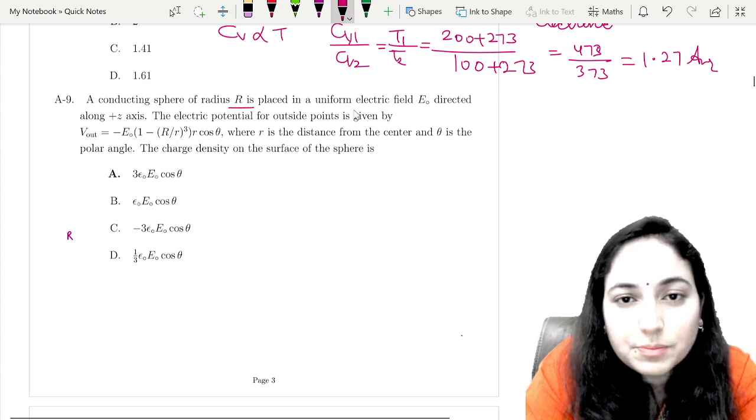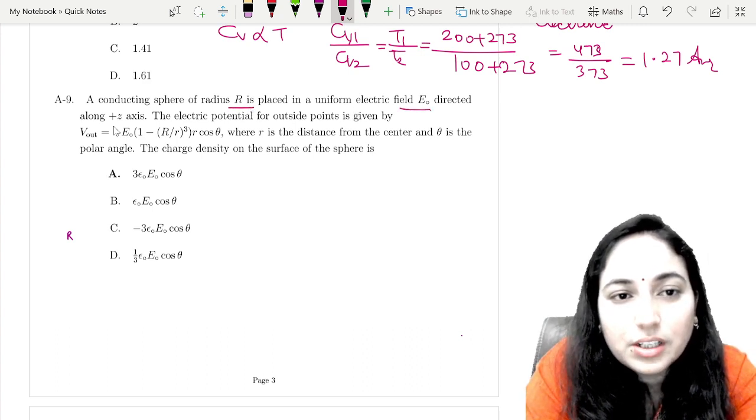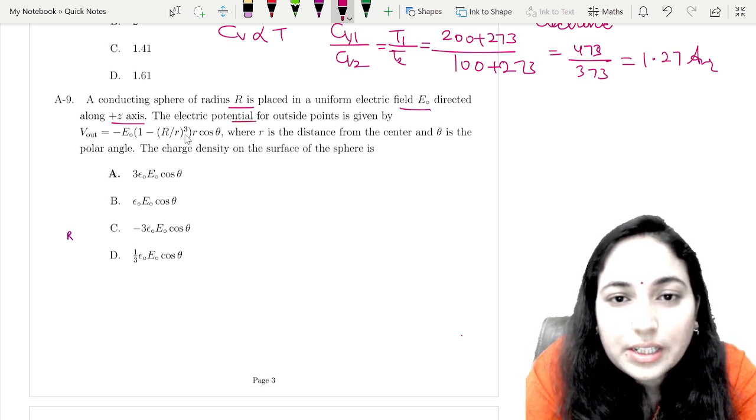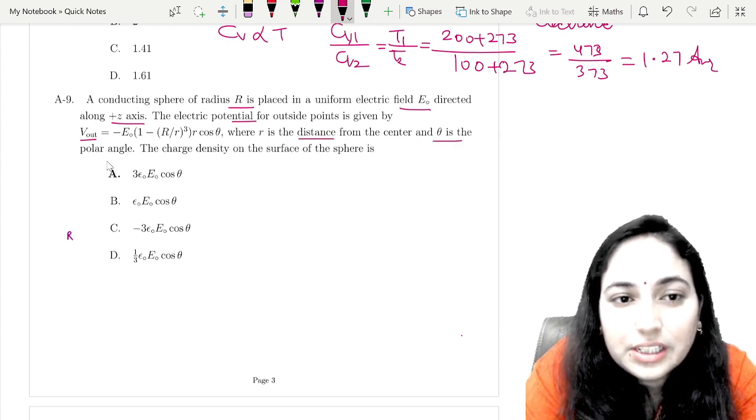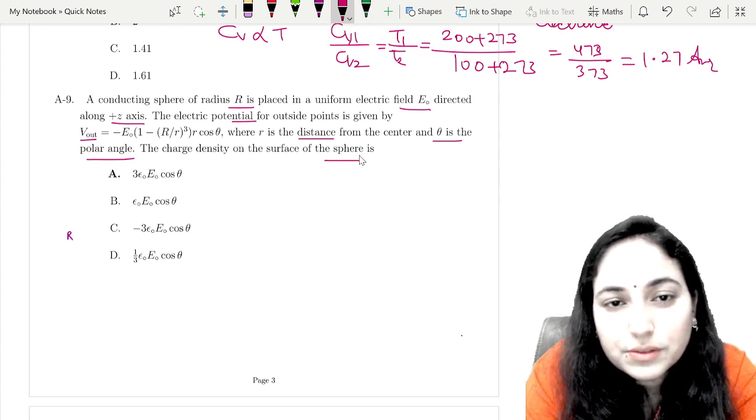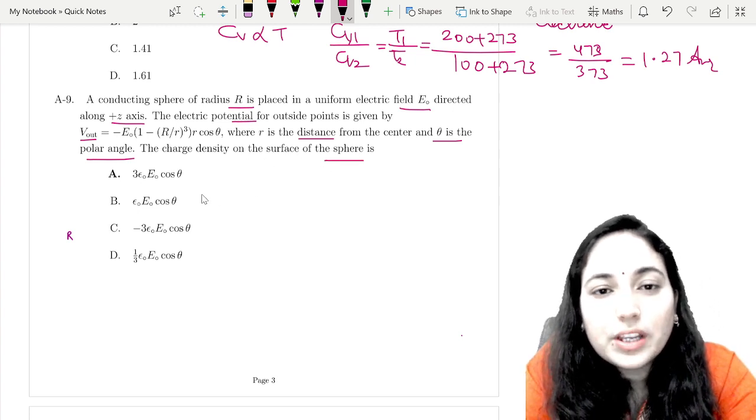A conducting sphere of radius R is placed in a uniform electric field E₀ directed along the z-axis. The electric potential at outside points is given by V_out, depending on theta and r, where r is the distance from the center and theta is the polar angle. Find the charge density on the surface of the sphere.